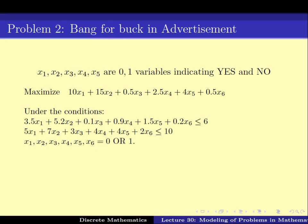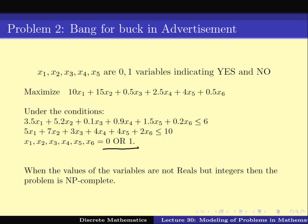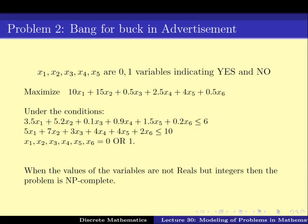The problem is that x1 through x6 are not real numbers — they are 0 or 1. This is what makes it a bit problematic. When the numbers are 0 and 1, we don't know how to solve the problem easily. In the language of algorithms, it is said to be an NP-complete problem, meaning we don't expect to get a very quick solution. Although we have managed to convert the problem into an LP formulation, since x1 cannot take fractional values, we don't know how to solve this problem quickly.